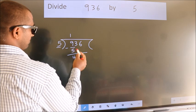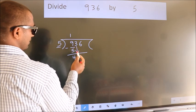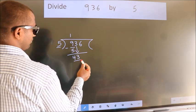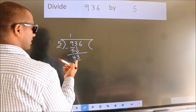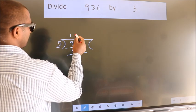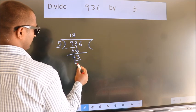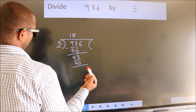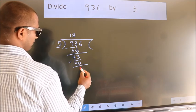After this, bring down the beside number. So 3 down. So 43. A number close to 43 in 5 table is 5 times 8, 40. Now we subtract. We get 3.